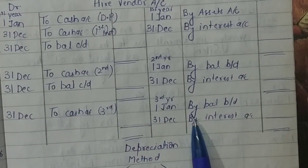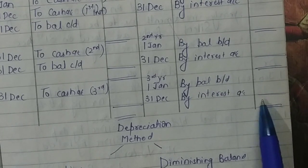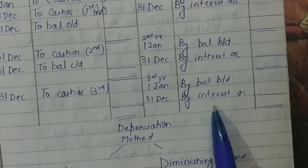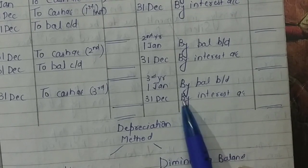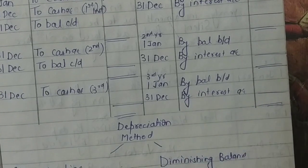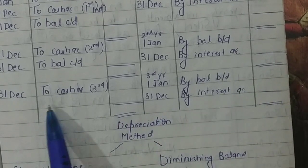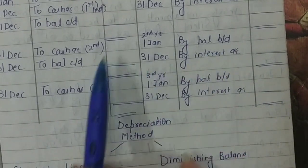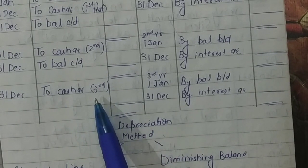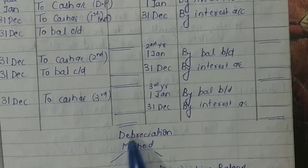Next year's first date: by balance brought down. After one more year, for the third time, interest must be made due. The number of installments to be paid also matters — as many installments as the question requires. After making interest due by interest account, at that same moment you pay the third installment. In the account I have illustrated, after the third installment, our account with the hire vendor is complete — nothing remains to be paid. So the account closes here.